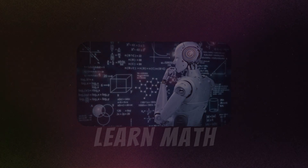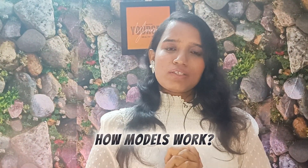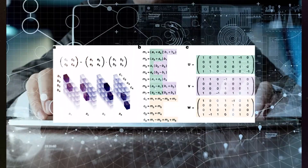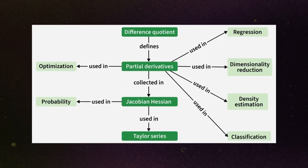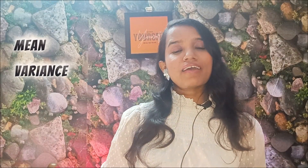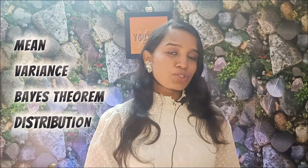Once you learn how to handle data in Python, you can move to math. Step number two: learn math for machine learning. The focus areas start from linear algebra — vectors, matrices, operations — then calculus: derivatives, gradient, and optimization concepts. Then statistics and probability, where you learn about mean, variance, Bayes' theorem, and distributions.